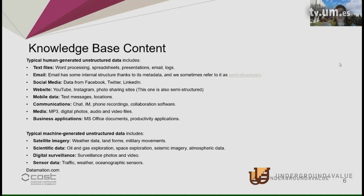What kind of information may be available there? Typical human-generated unstructured data like text files, emails, data from social media websites, maybe data collected from mobile resources like text messages, or location-related information extracted from mobile data and communications, media like photos, audio and video files, or some machine-generated data like scientific data from sensors, satellite imagery, or digital surveillance. These are, as you see, very relevant to our case as well.